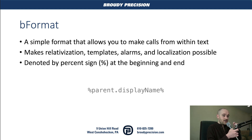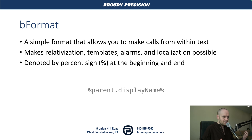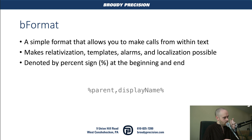B Format is a simple format that allows you to make calls to various parts of a Niagara station from just within a bit of string text. This is what makes relativization, PX's, templates, alarms, and localization all possible. You can tell it's B Format because of the percent sign at the beginning and the end, and we can also string these B Format calls together using a dot, like parent.displayName.